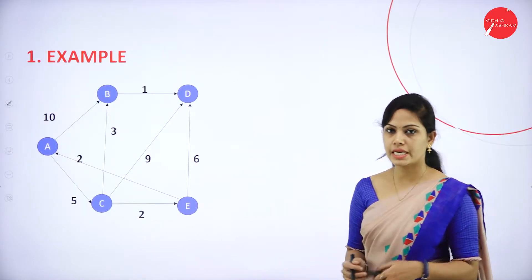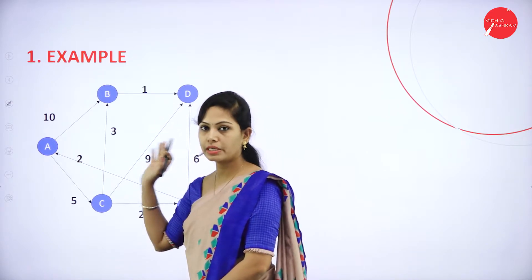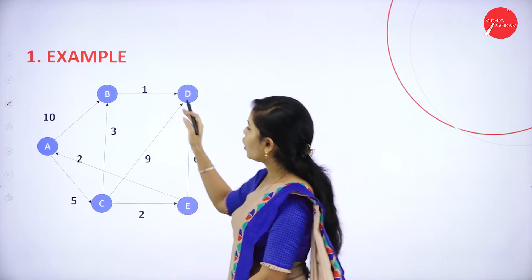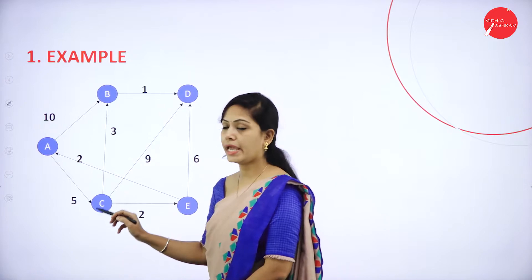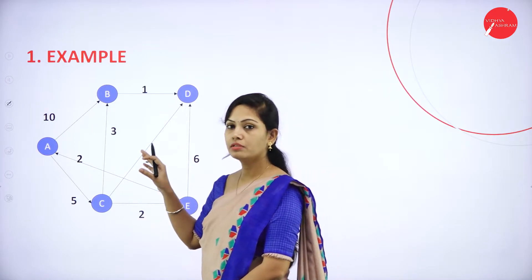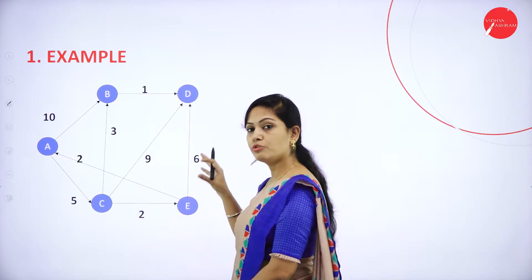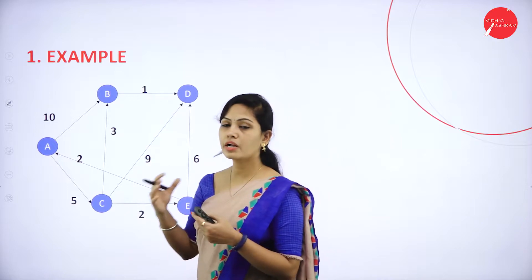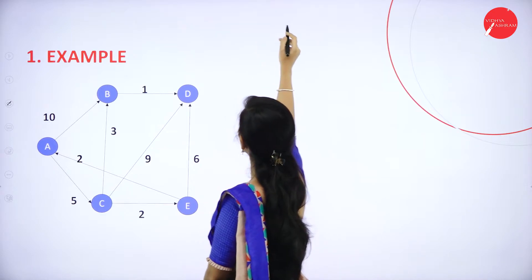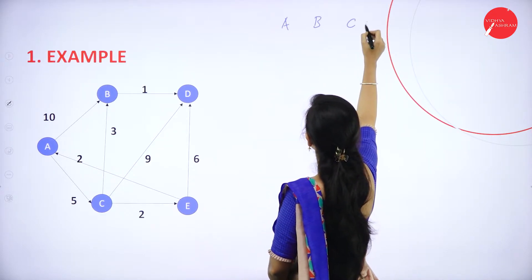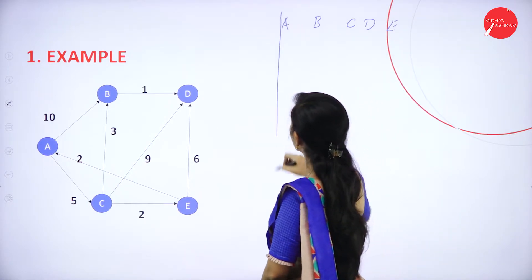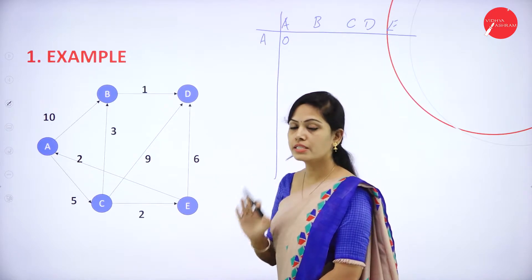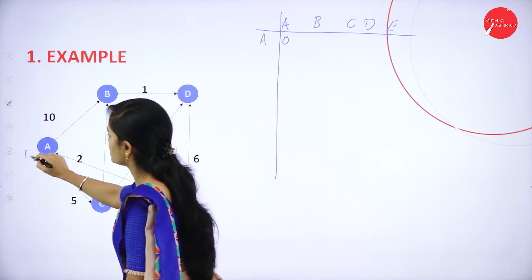Next, let's look at the first example for Dijkstra's algorithm. Observe the graph — there are 5 vertices: A, B, C, D, E, and 8 edges. The concept is to travel from A to E or A to D and choose the shortest path using Dijkstra's algorithm. We list the vertices A, B, C, D, E. To travel from vertex A to vertex A, the initial value starts from 0. The remaining edge weights are infinity.